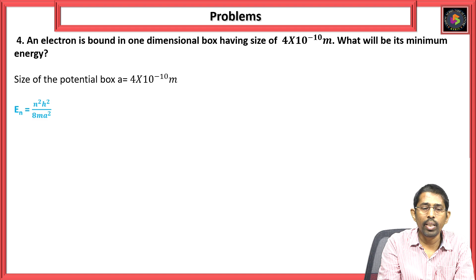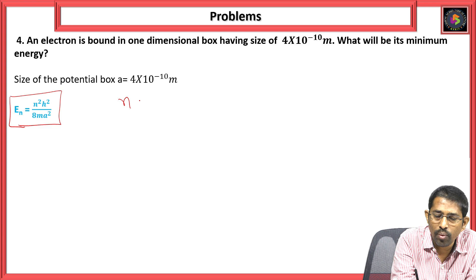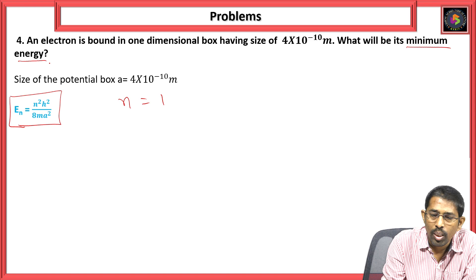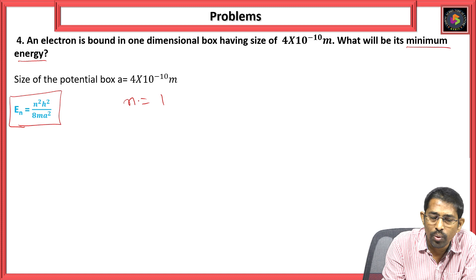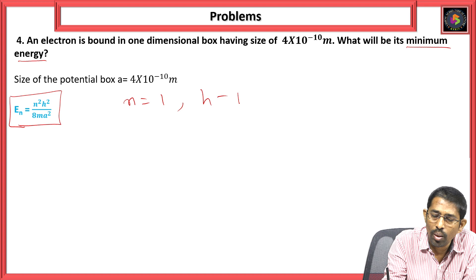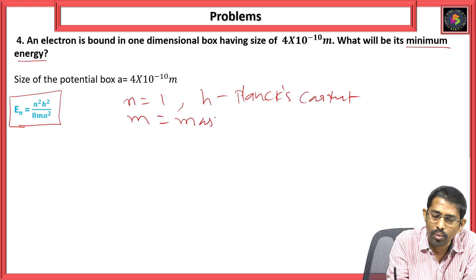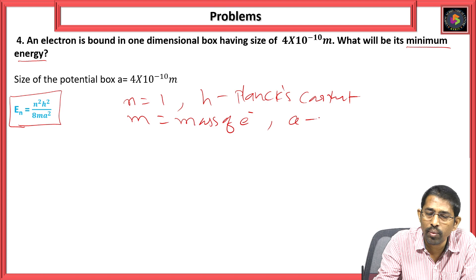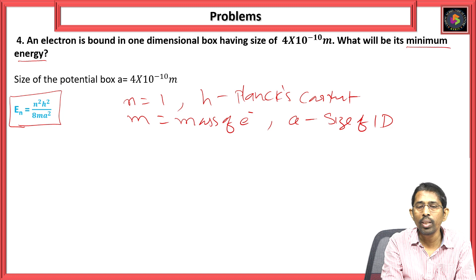Based on the one-dimensional potential box: En = n²h² / (8mA²). For minimum energy, n = 1. Here h is Planck's constant, m is the mass of the electron, and A is the size of the one-dimensional potential box where the electron moves.